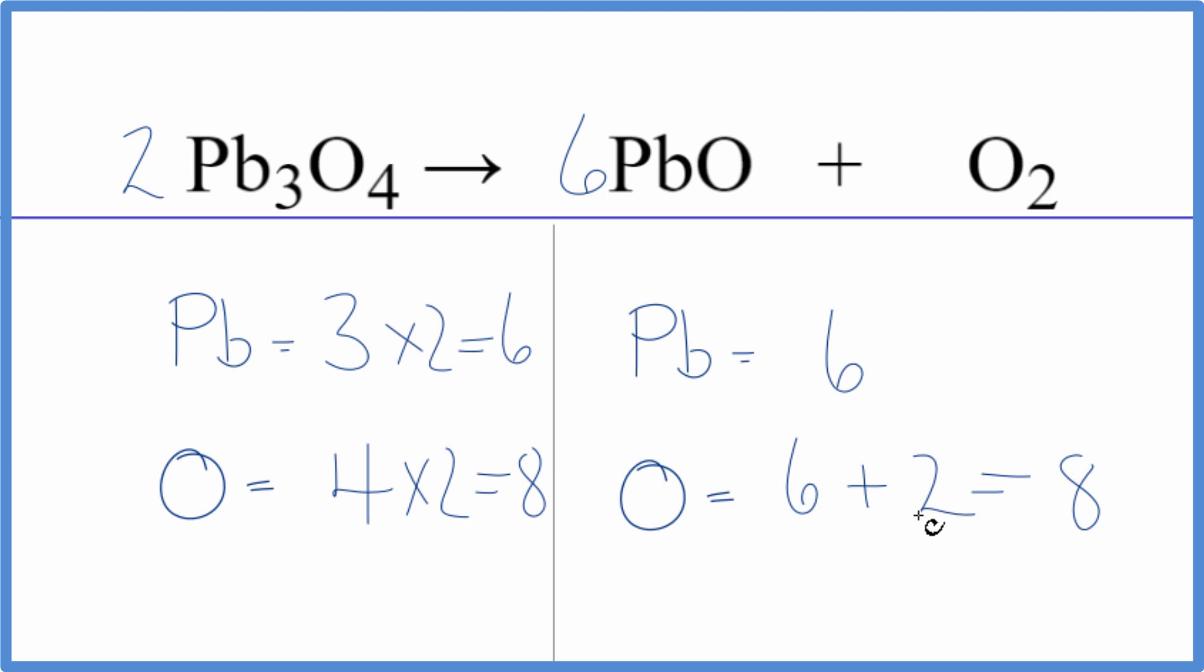So the trick here, if you have an odd number, it's often good to try to get that to an even number if you can. This is Dr. B with the balanced equation for Pb3O4 yields PbO plus O2, the decomposition reaction of lead 2,3 oxide plus lead 2 oxide plus oxygen gas. Lots of oxygen.